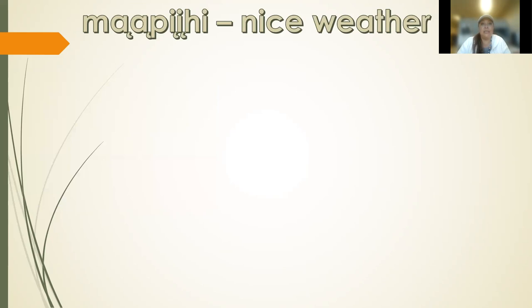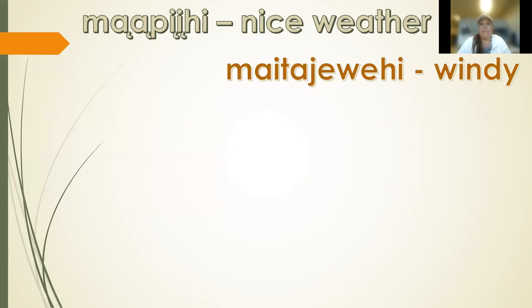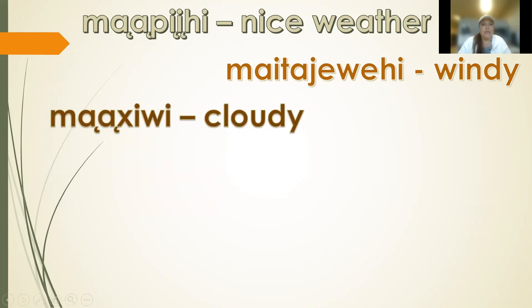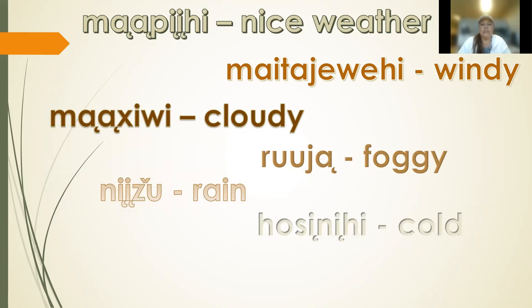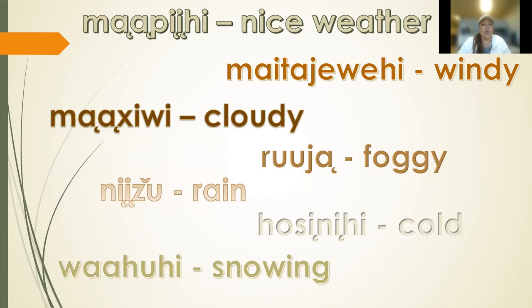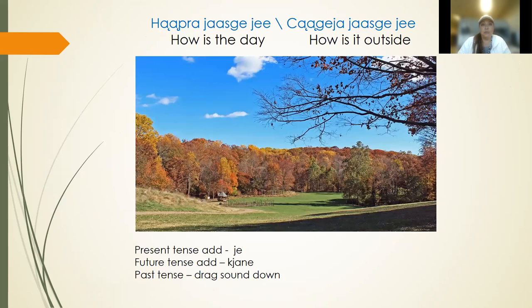That was seven for us. To recap: 'ma pihi' is nice weather; 'ma pihi' is windy; 'ma pihi' is cloudy; 'roo jang' is foggy; 'niju' is rain; 'osinihi' is cold; and 'wahoo hijay' is snowing. And as a reminder, 'thanhaparajaskejeje' or 'chonggeja jaskejeje,' or 'happarajaskeje' or 'chonggeja jaskeje' — either way, it's up to you, whichever phrase you want to use.